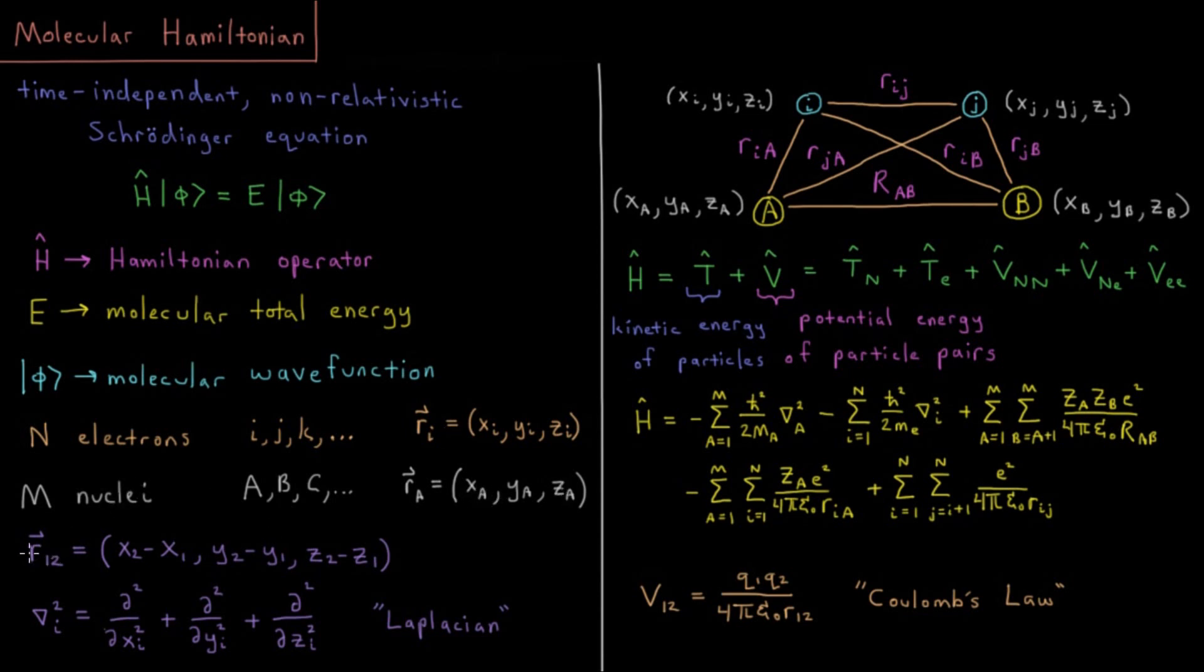What's the distance between two particles? If I have particle 1 and particle 2, then position vector r₁₂ is the difference in each Cartesian dimension. Vector for particle 1, vector for particle 2, subtract final minus initial gives the vector from particle 1 to particle 2: x₂-x₁, y₂-y₁, z₂-z₁.